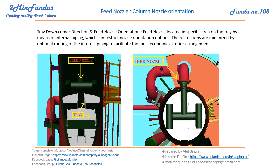The main agenda is that the feed should fall on the tray only. It should not fall in between on the downcomer area. This is the basic concern we need to take care of while orienting the feed nozzle, considering the tray downcomer direction and feed orientation.